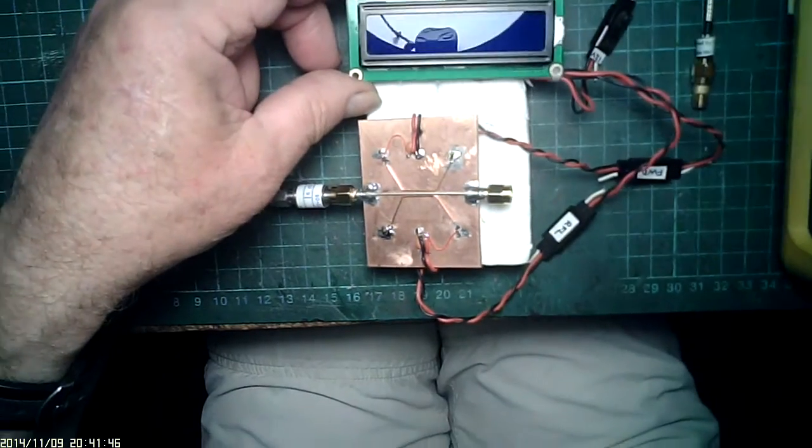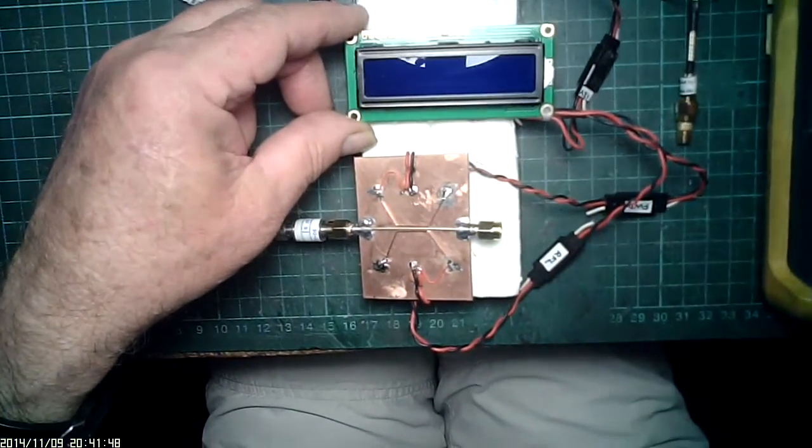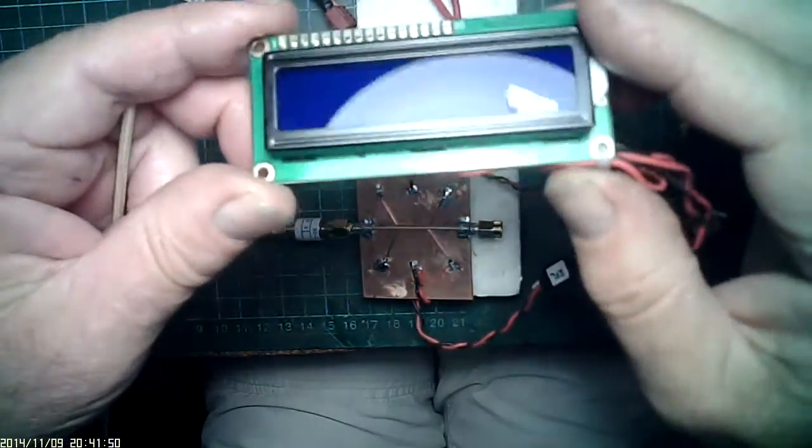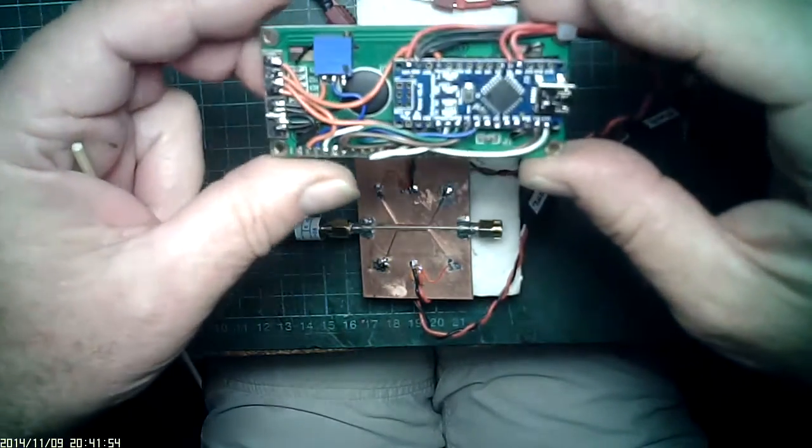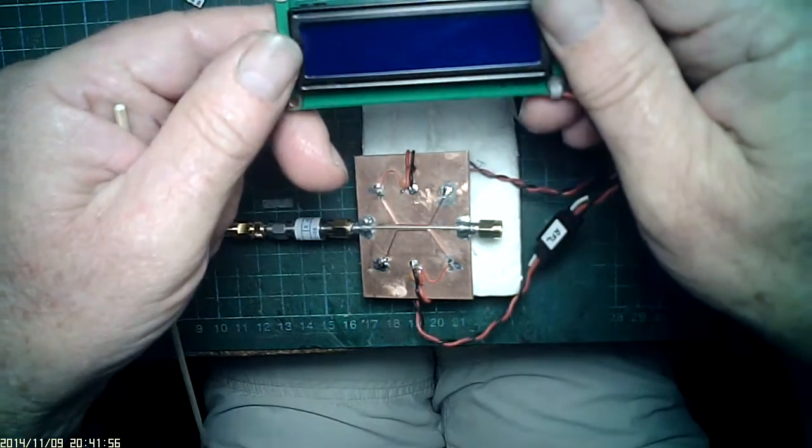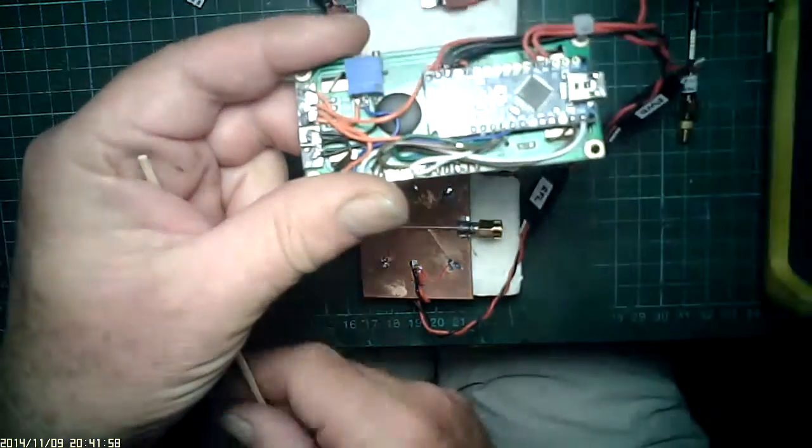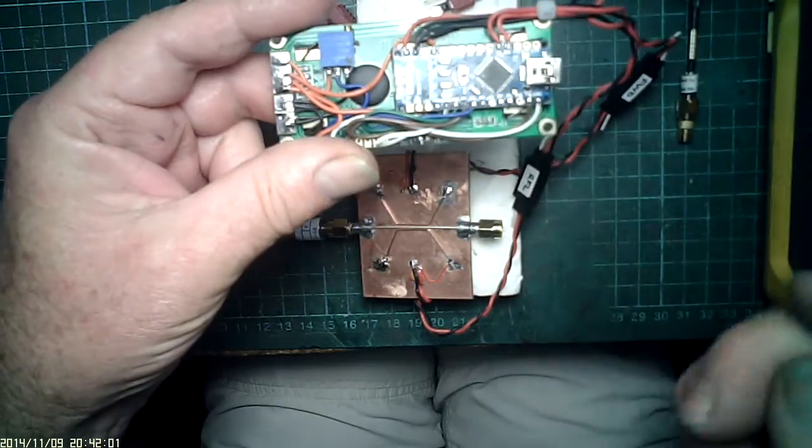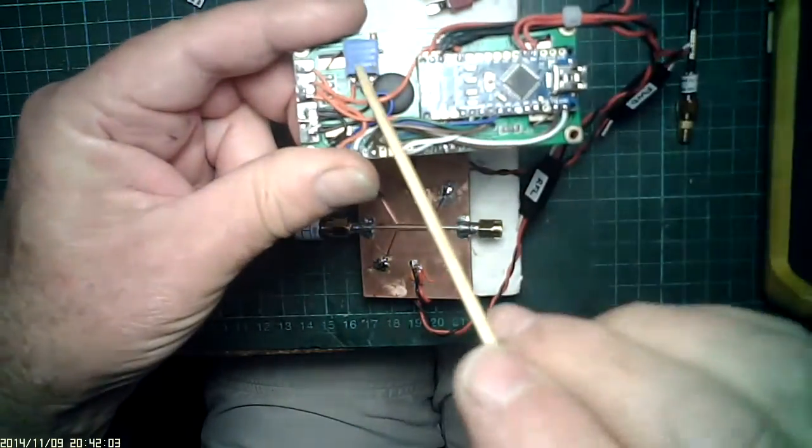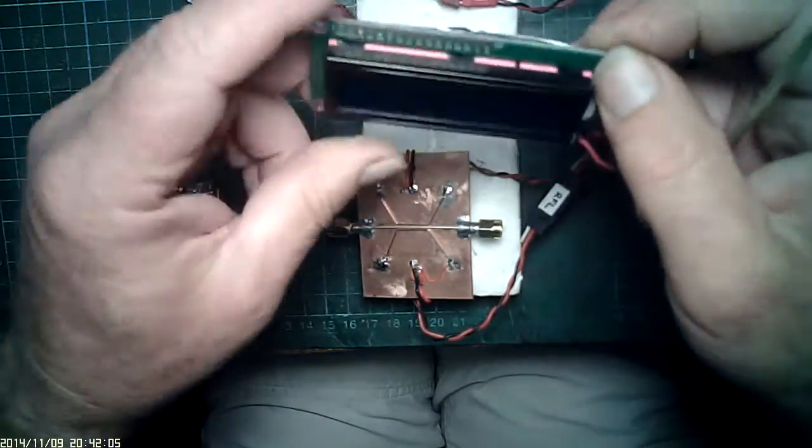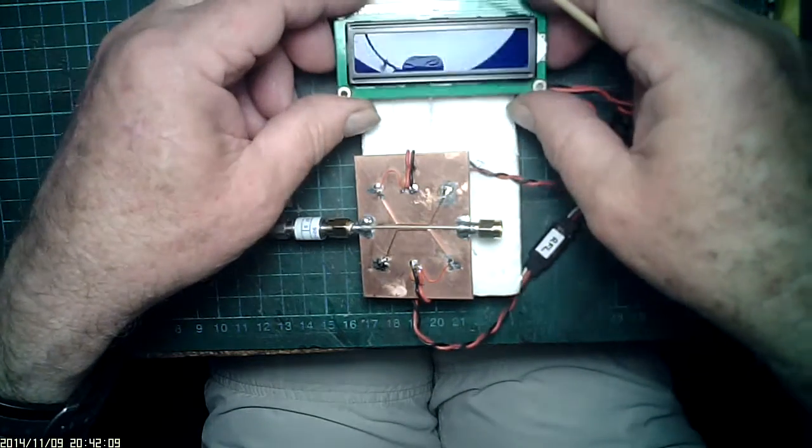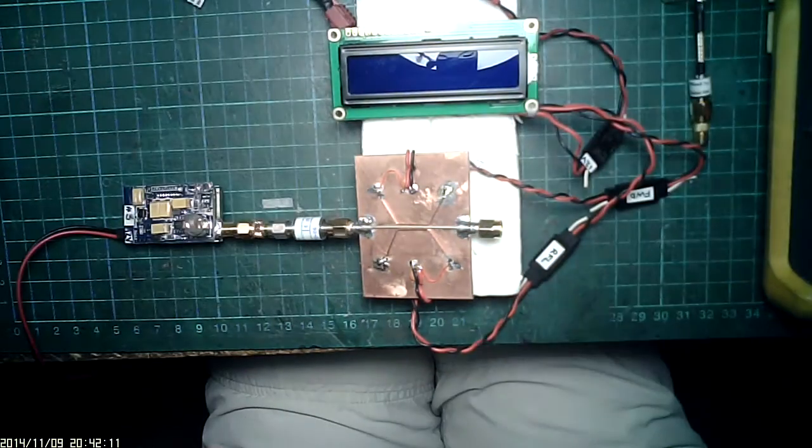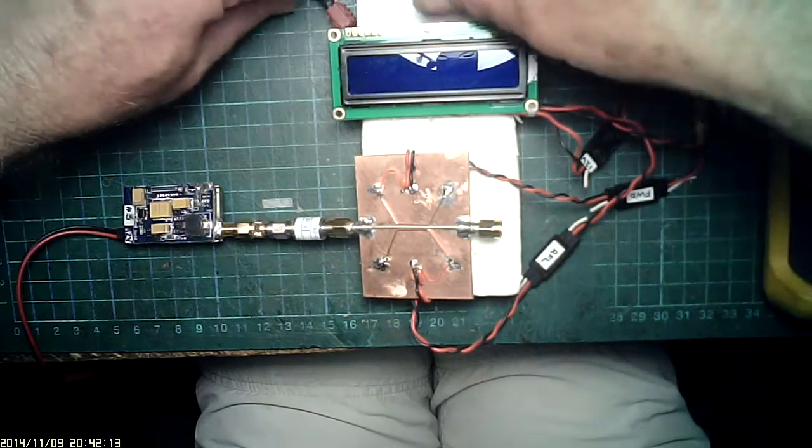Tonight we have a 16 by 2 display, Arduino nano board, contrast pot. The software is by Mio Udon and the bi-directional coupler by yours truly.